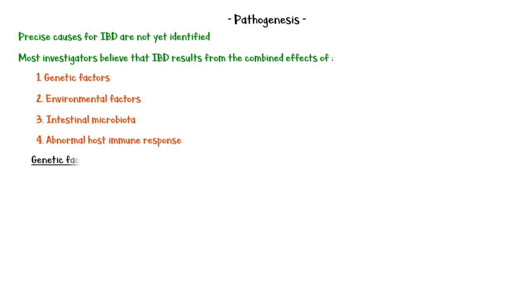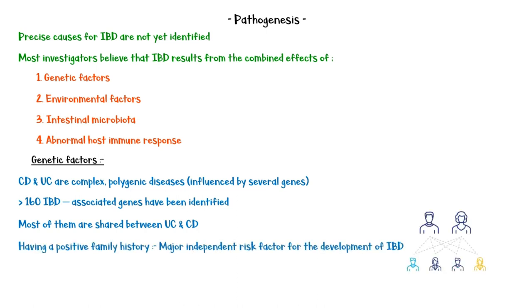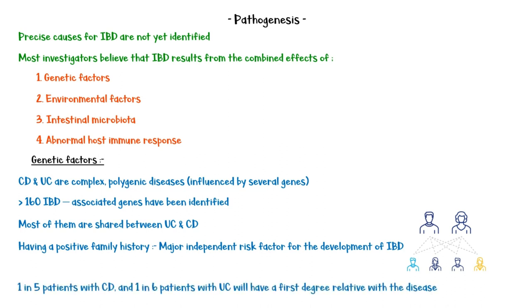Both Crohn's disease and ulcerative colitis are complex polygenic disorders, which means that they are influenced by several genes. More than 160 IBD-associated genes have been identified, and most of them are shared between ulcerative colitis and Crohn's disease. Having a positive family history of the disease is the major independent risk factor. One in five patients with Crohn's disease and one in six patients with ulcerative colitis will have a first-degree relative with the disease.